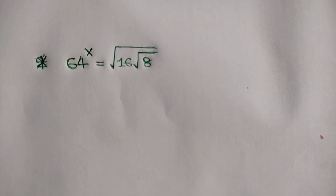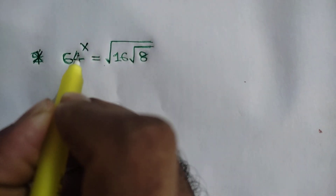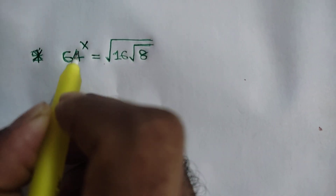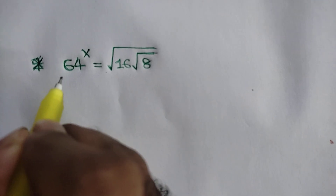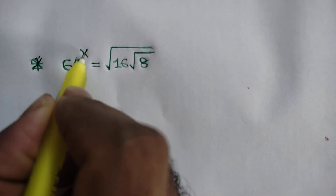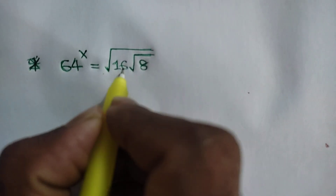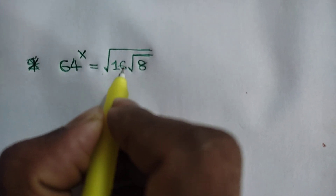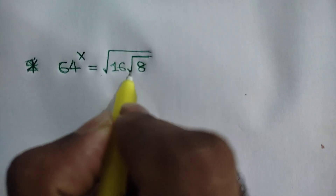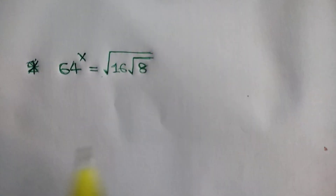Hi everyone. In this video I am going to show how to find the value of x where 64 to the power x is equal to the square root of 16 times the square root of 8.